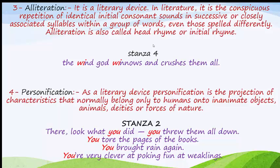Let's understand alliteration with its use in the fourth stanza: 'The wind god winnows and crushes them all.' Here, 'wind' and 'winnows' are quite close to each other, and the consonant sound 'w' is prominent in both. So the use of 'wind' and 'winnows' together is an example of alliteration.